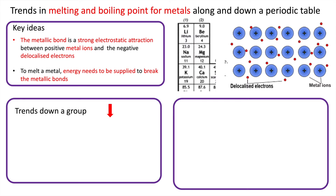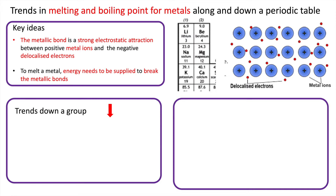Looking at the trend in melting and boiling points as you go down the group: the key thing is that the radius of the metal ion increases because there are more shells, which means there's a greater distance between the delocalized electrons and the positive nucleus. So the metallic bond gets weaker, also due to electron shielding. If the bonds are weaker, it takes less energy to break them and the melting point goes down.